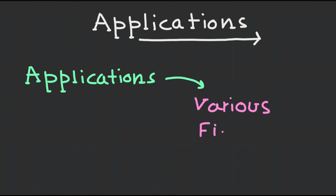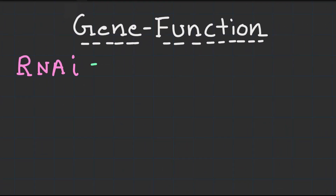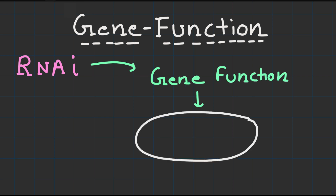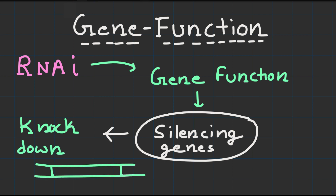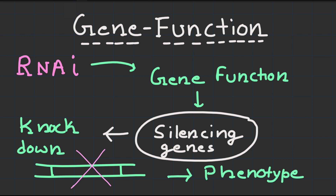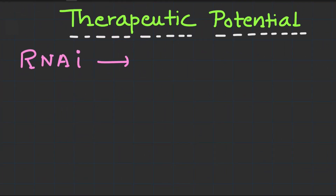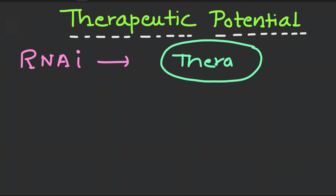Now let's explore some exciting applications of this powerful tool. RNAi enables researchers to study gene functions by selectively silencing specific genes of interest. By introducing siRNAs or designing miRNA-based approaches, scientists can knock down gene expression and observe the resulting phenotype, helping unravel gene functions.